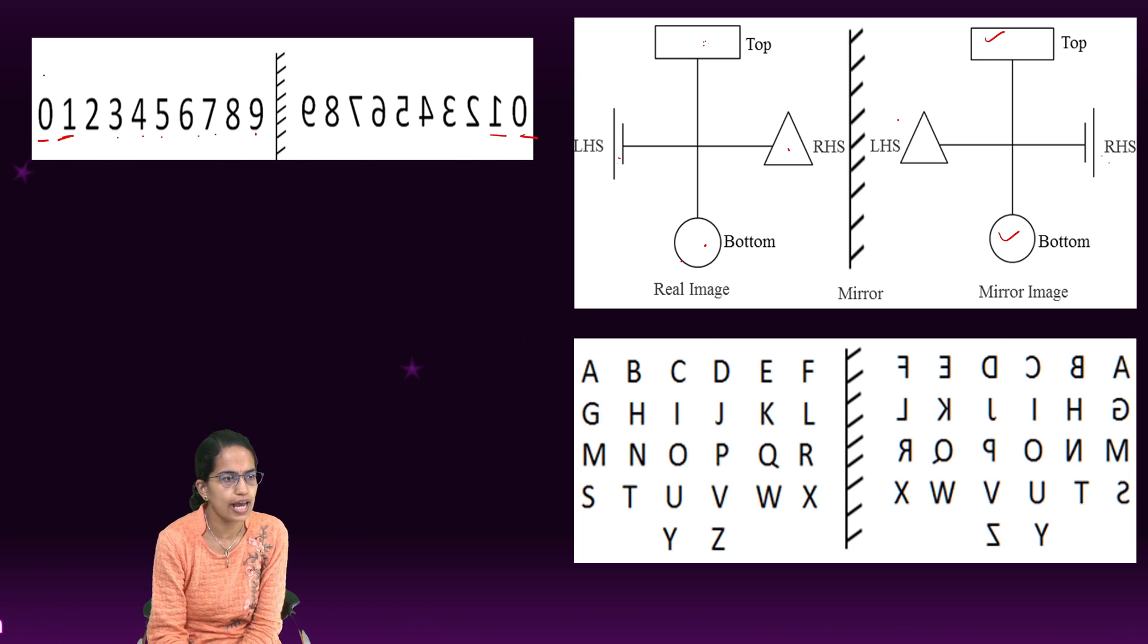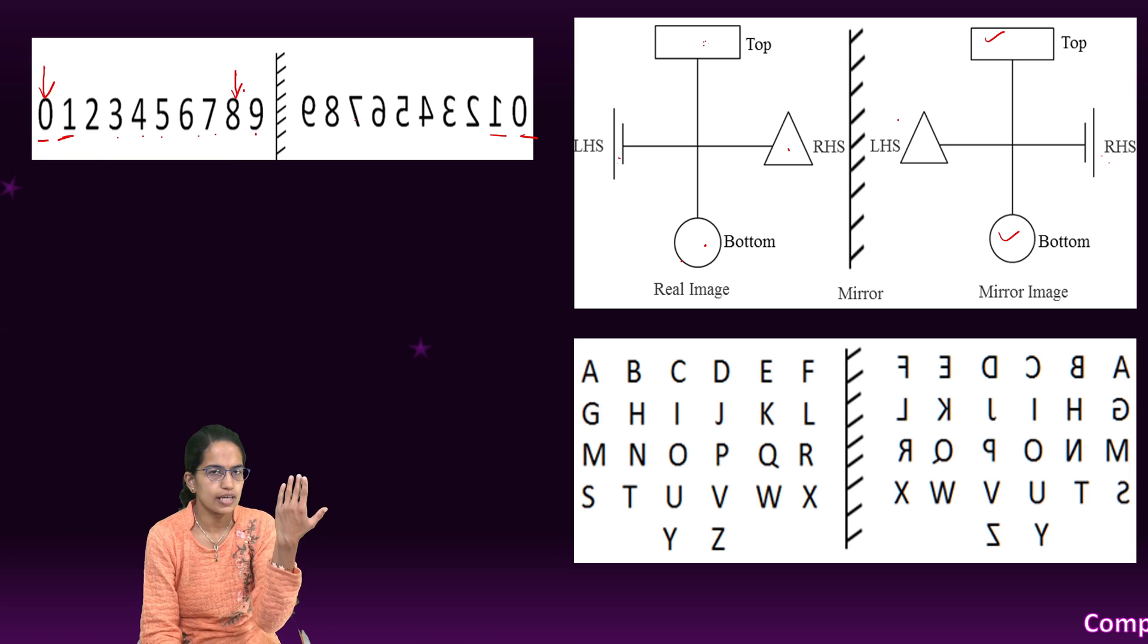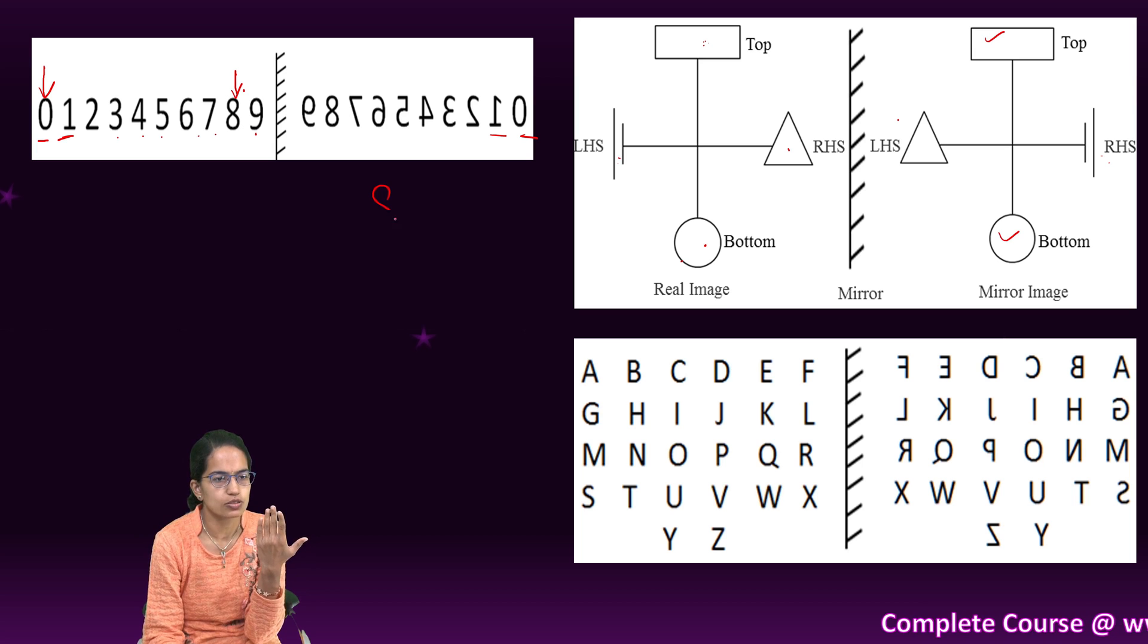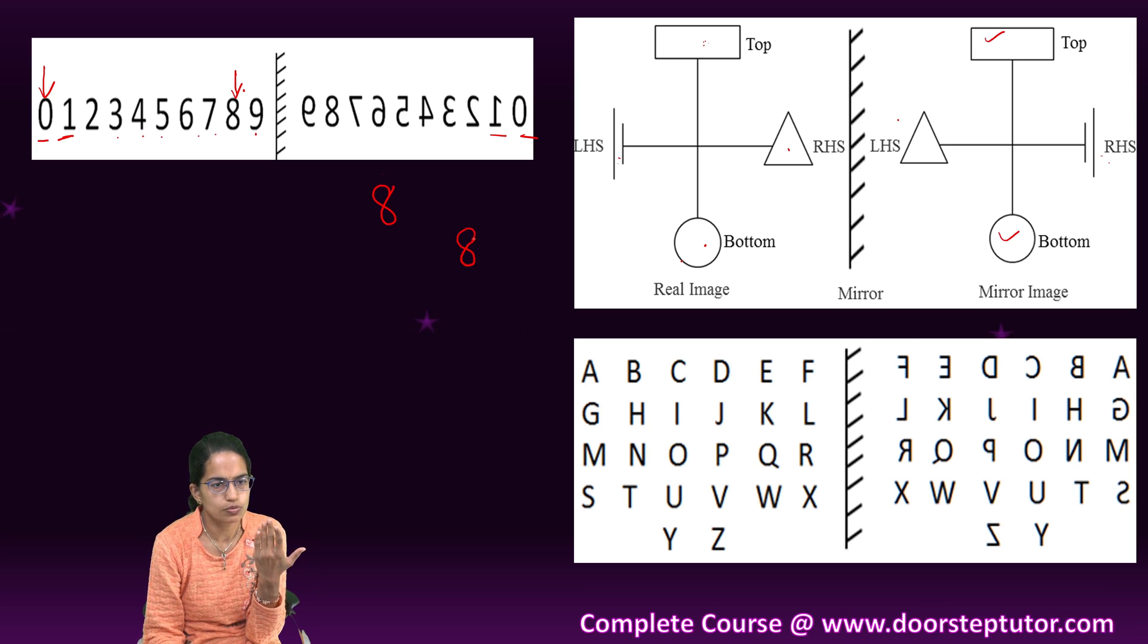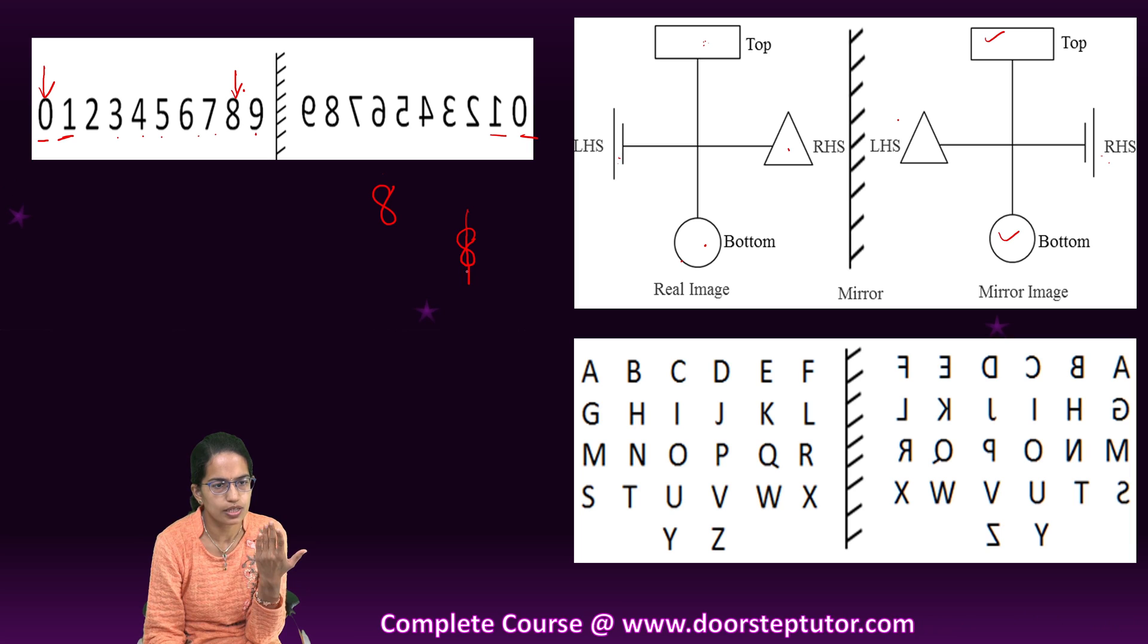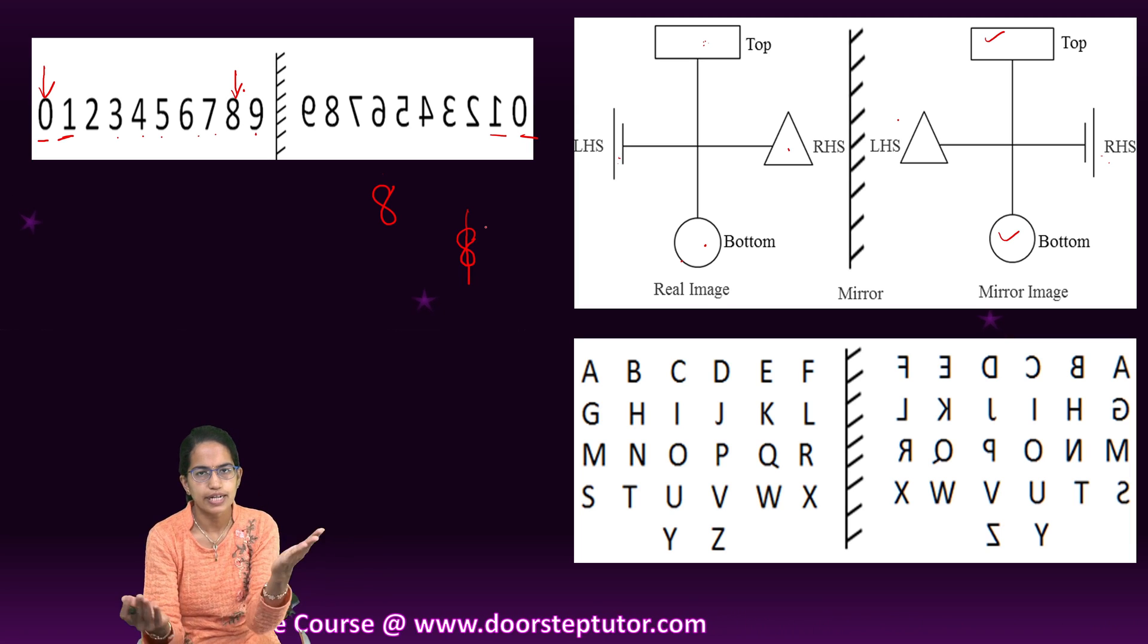The only numbers which would remain as it is are 0 and 8 because they are left to right symmetric. So if I have this 8, if I draw a smooth 8 and I cut it in between, the left side and the right side actually overlap one another.